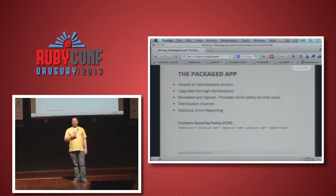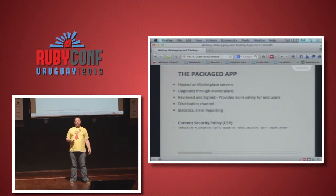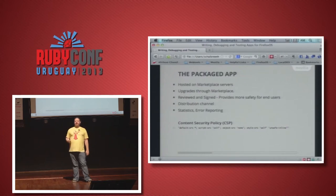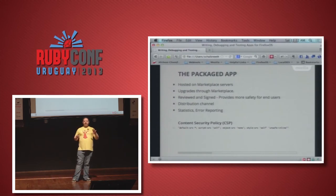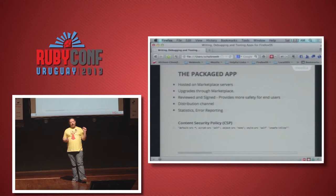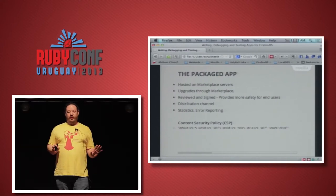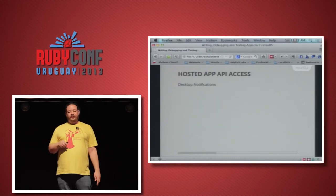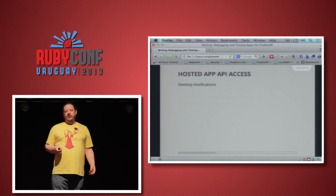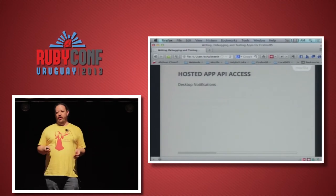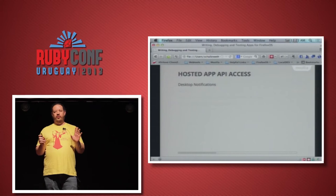The content security policy is implicitly part of any app that goes on the marketplace, but you can still use it for hosted apps too — put it in your manifest or send it as a header. One of the other differences between hosted and privileged apps is API access. Because hosted apps don't go through any review process, we have to be careful not to give them access to too many sensitive APIs.